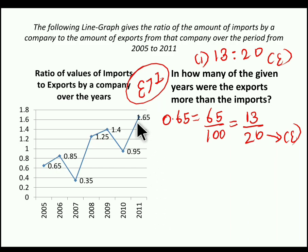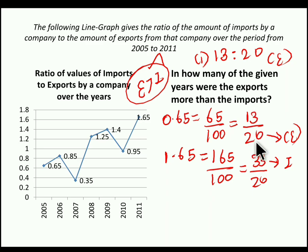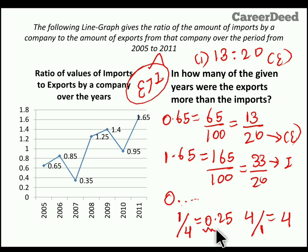For example, if you take the year 2005, the ratio of import to export is 0.65. 0.65 can be written as 65/100. Reducing, you get 13/20, which means import is 13 and export is 20. So export is greater than import in 2005. For the year 2011, the ratio is 1.65, which is 165/100, reducing to 33/20 — here import is greater than export. If export should be greater than import, the denominator must be greater than the numerator, giving a value starting with 0 point something.